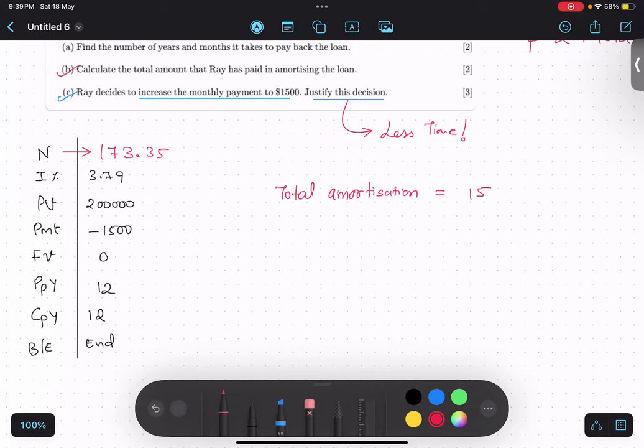Total amortization. So, how much money I am paying? 1500. How much time? 173.35. Tell me how much money I have paid. Let me use my calculator. So, 1500 multiplied by 173.35. So, I am paying $260,000. Okay. $260,000.